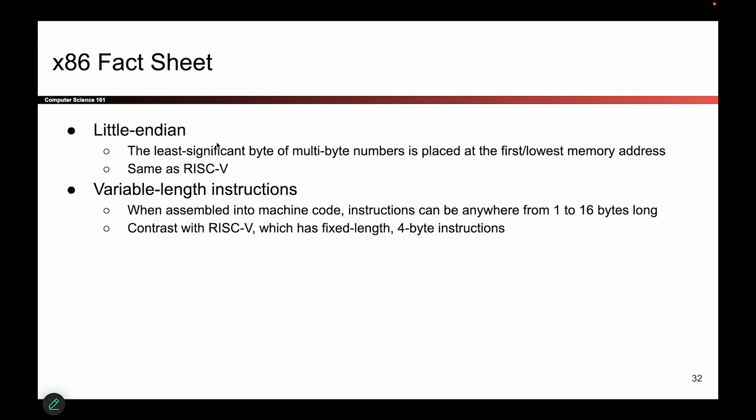x86 is little-endian. We talked about this earlier. When you have a chunk of four bytes, you read it from the highest memory address to the lowest memory address. RISC-V was actually the same.